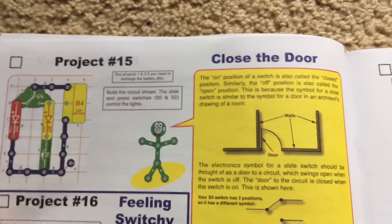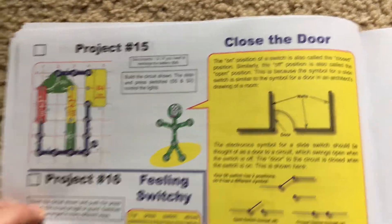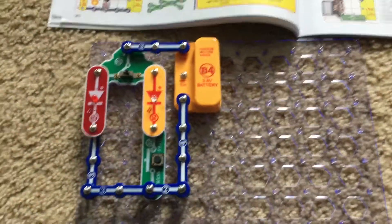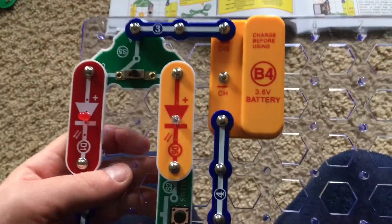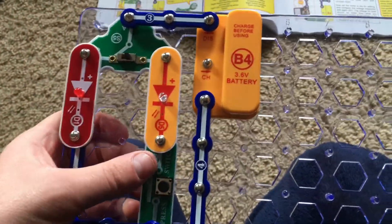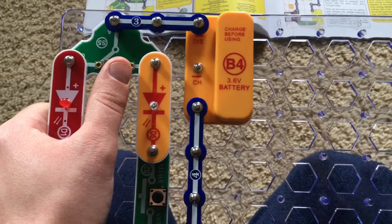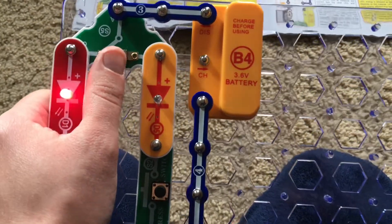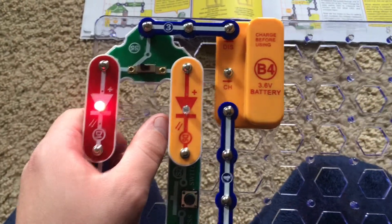Project 15, close the door. The principle of this circuit is very interesting. We have the red and yellow LEDs and both switches. When we move the slide switch to the left position, the red LED comes on.